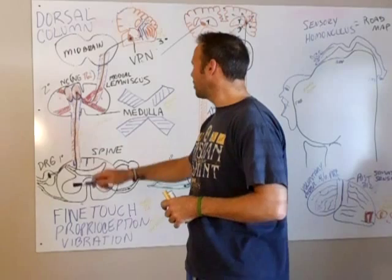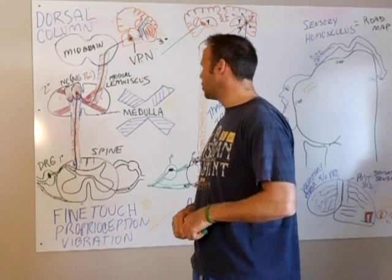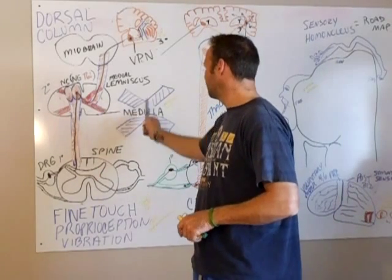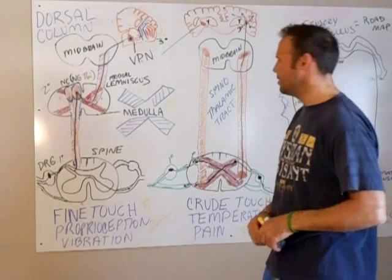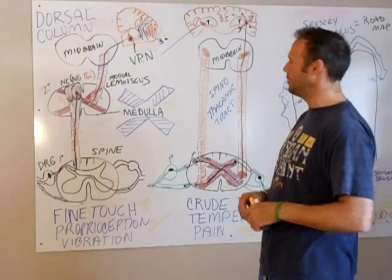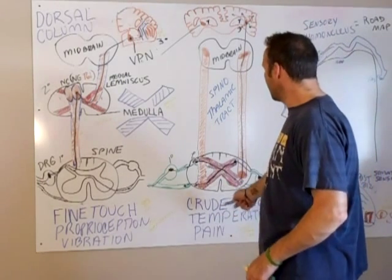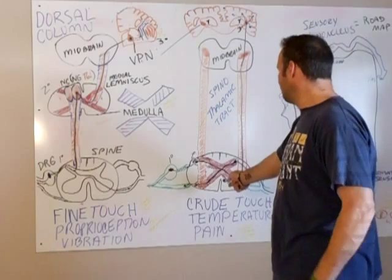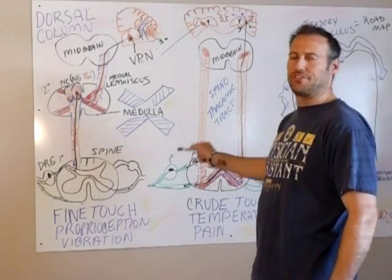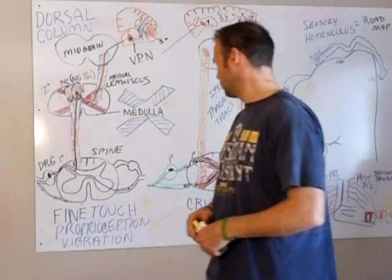In the dorsal column, it crosses in the medulla — as you can see, the X marks the crossing or decussation. In the spinothalamic tract, it crosses immediately as soon as it enters the spinal cord.